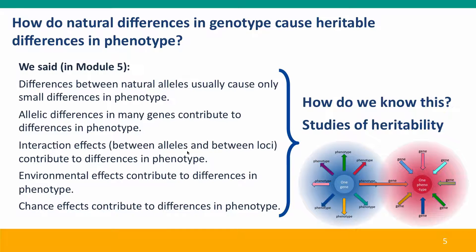Heritability also underlies pretty much everything we discussed in Module 5. We talked about how natural alleles can cause differences in phenotype, how many genes contribute to differences in any particular trait and the size of each gene's effects. We talked about how interactions between alleles and between loci complicate their effects on phenotype, and how both environmental factors that can be controlled and chance factors that can't be controlled contribute to differences. Understanding all of this depends on being able to study the heritability of the traits.